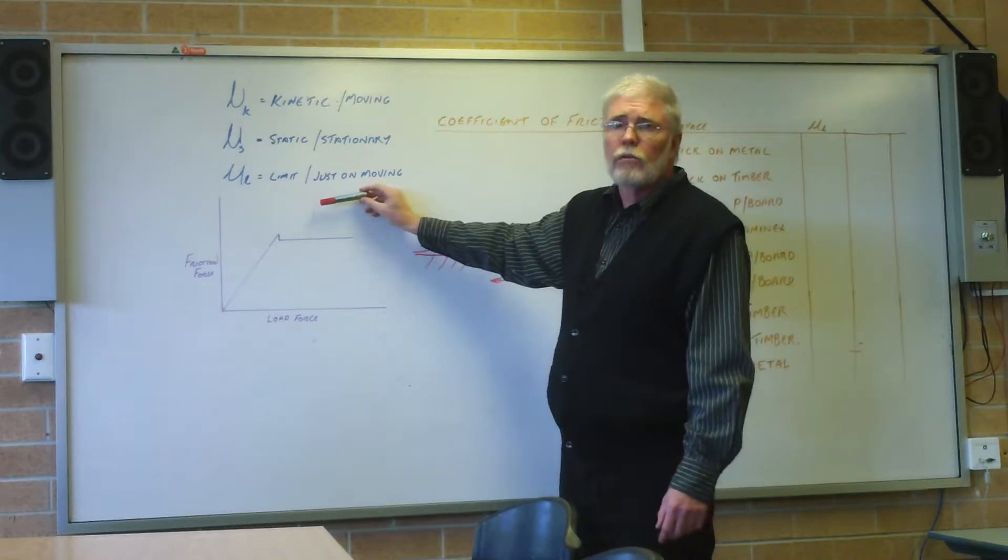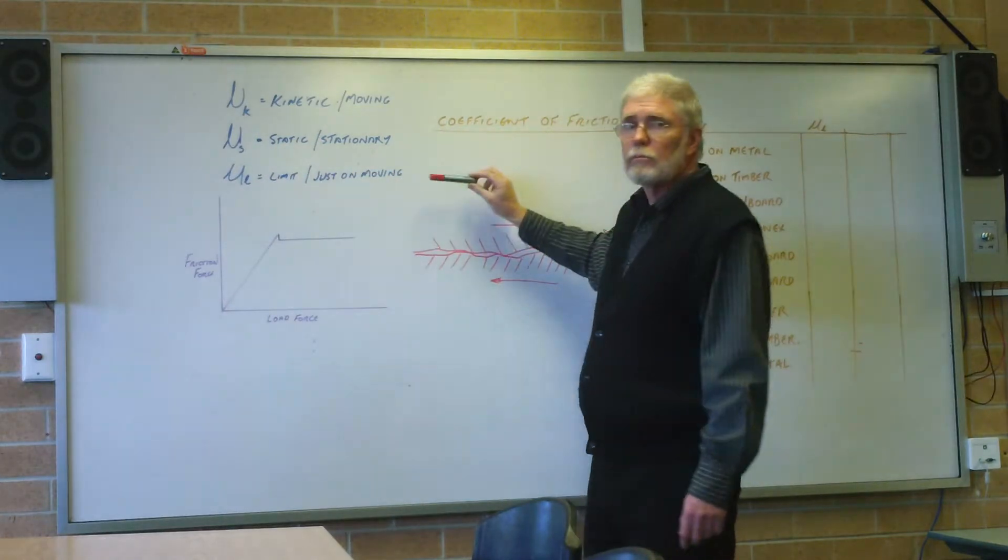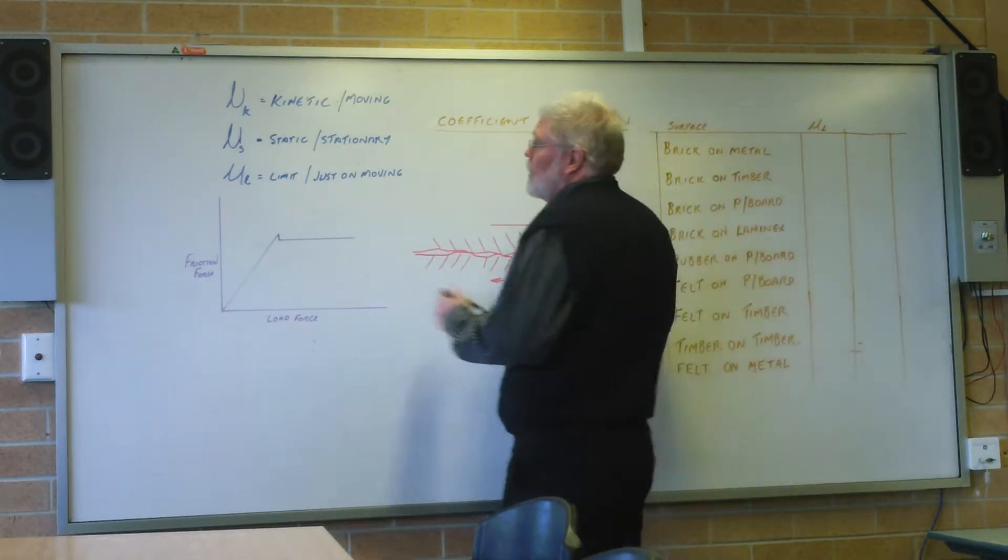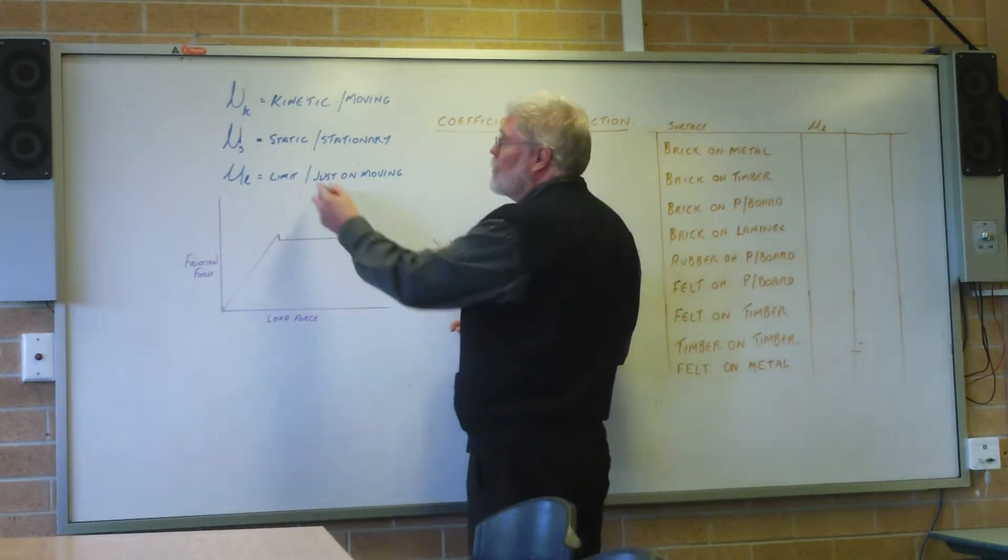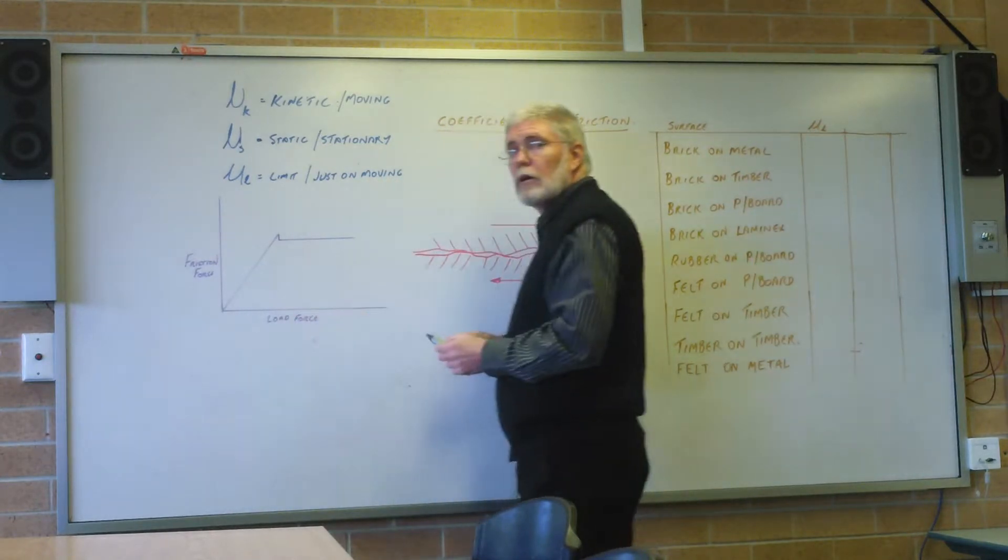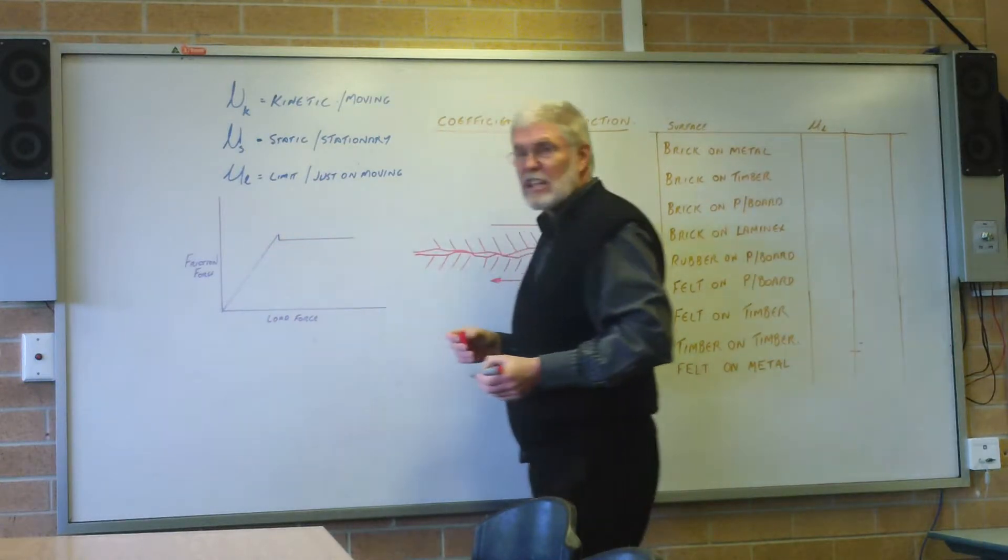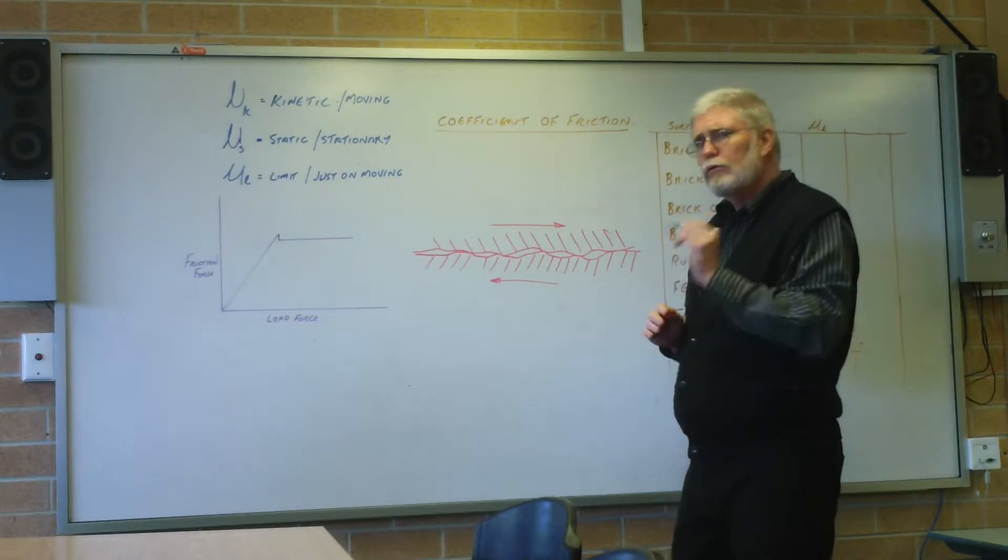The experiment you were doing was basically to determine the limit of friction just moving. The fact is that up to the limit of friction, the static value is exactly the same. Whatever you've determined for the limit of friction, that's going to be your static value. But when movement takes place, the kinetic value may be just a little bit less, not too much less.